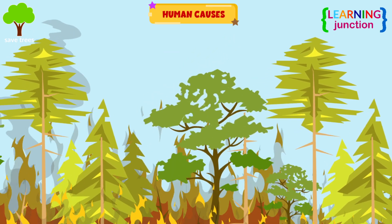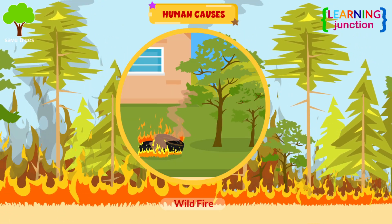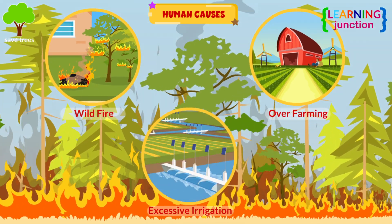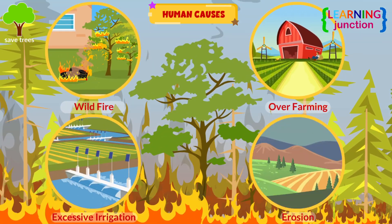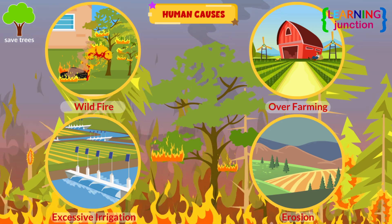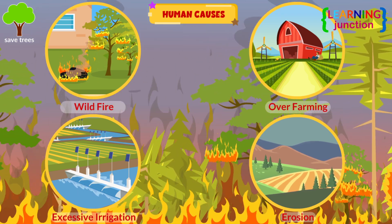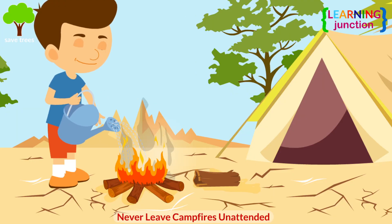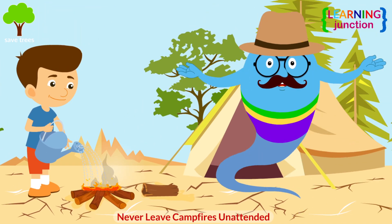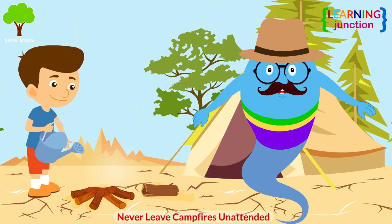Human causes. Human activities such as wildfire, over-farming, excessive irrigation, and erosion adversely impact the ability of the land to capture and hold water. Never leave campfires unattended, and always extinguish them properly after use.